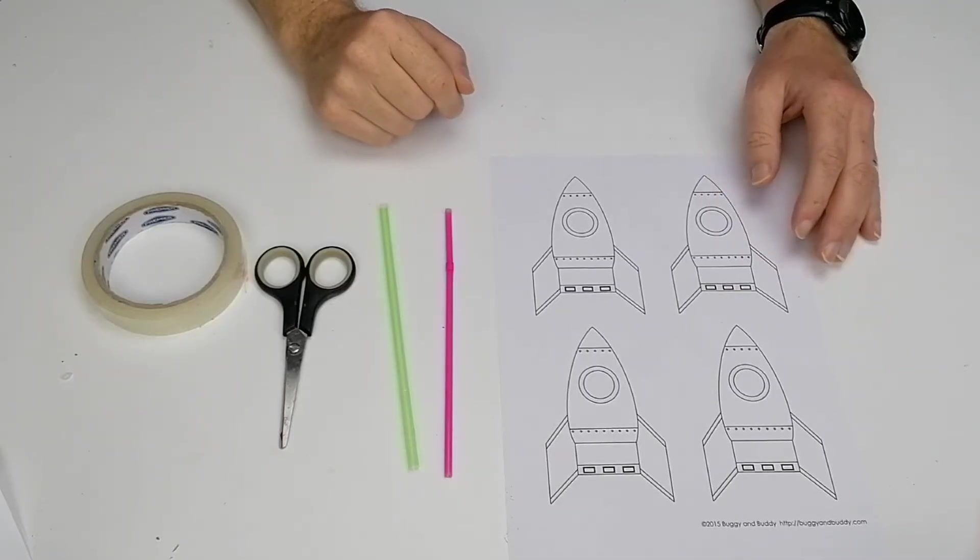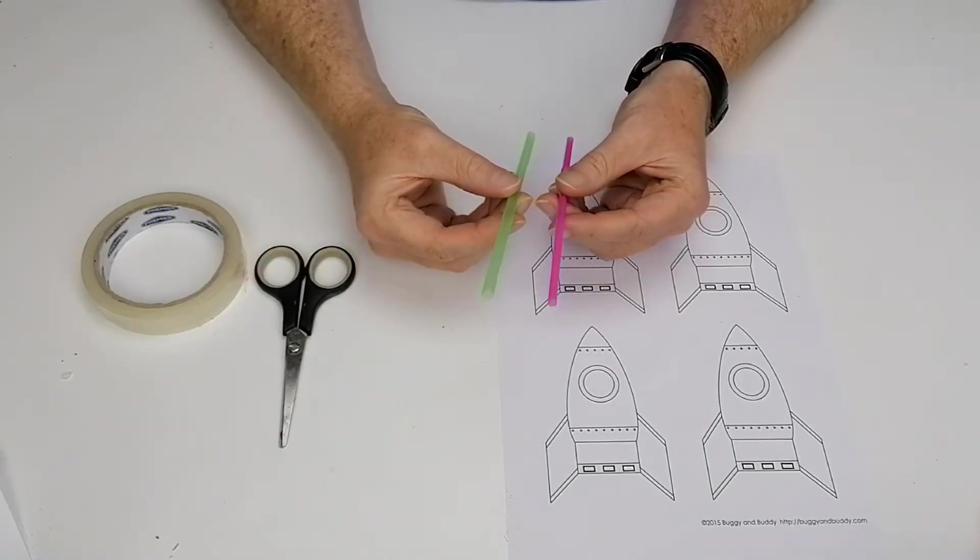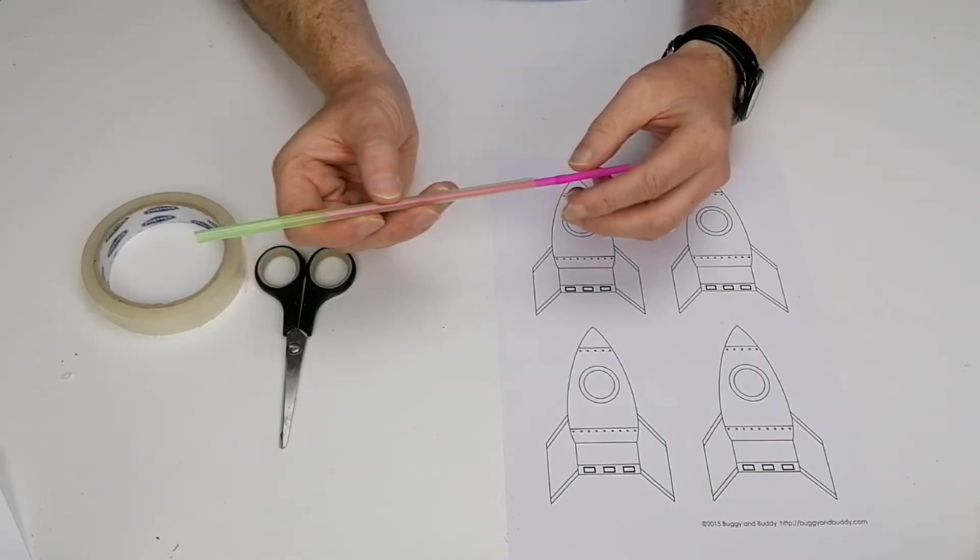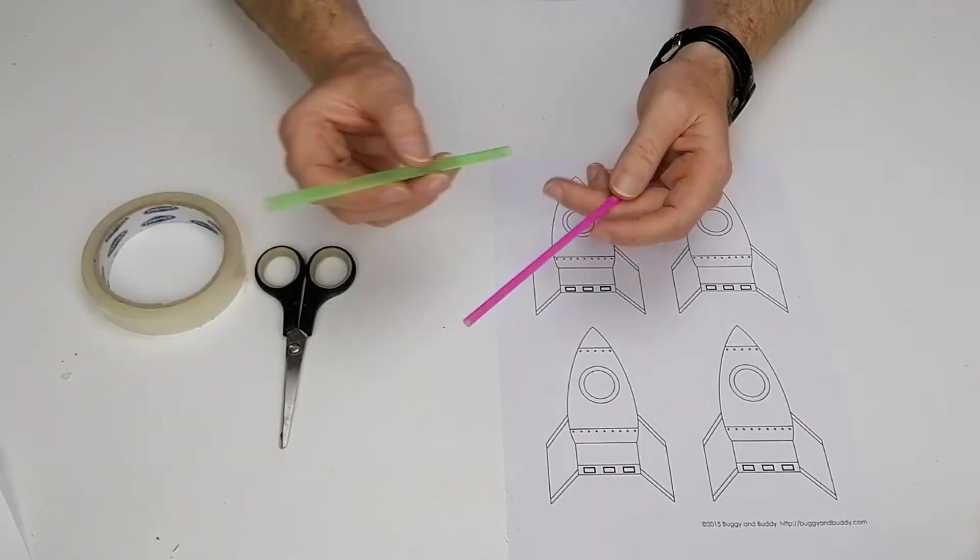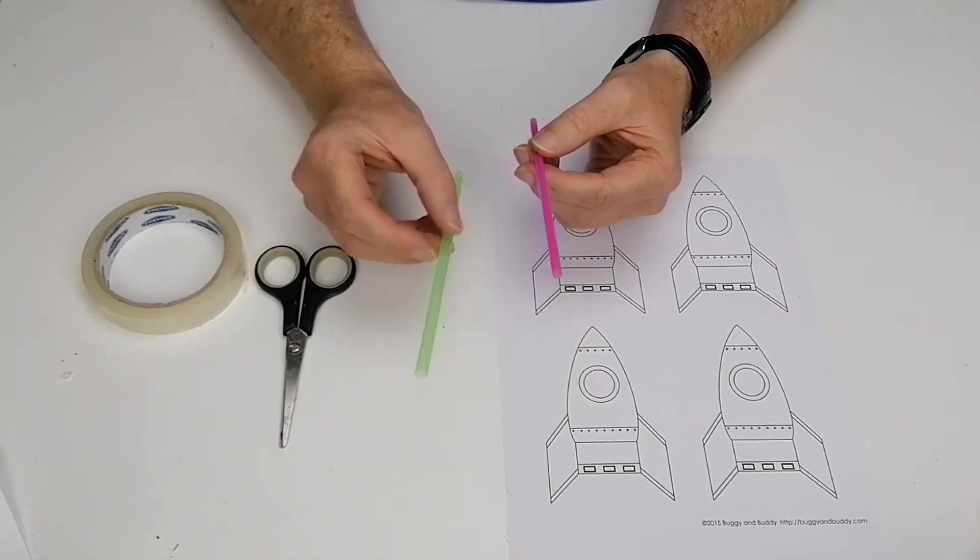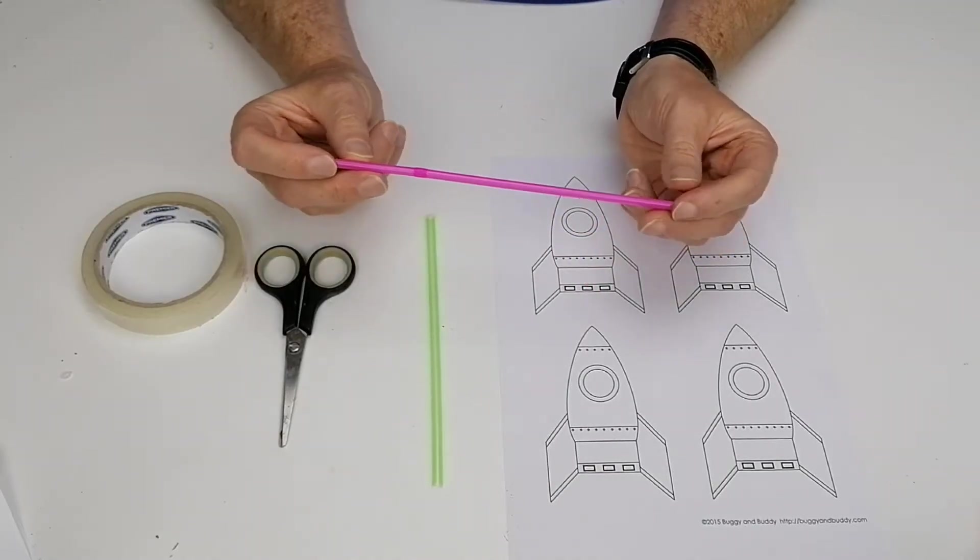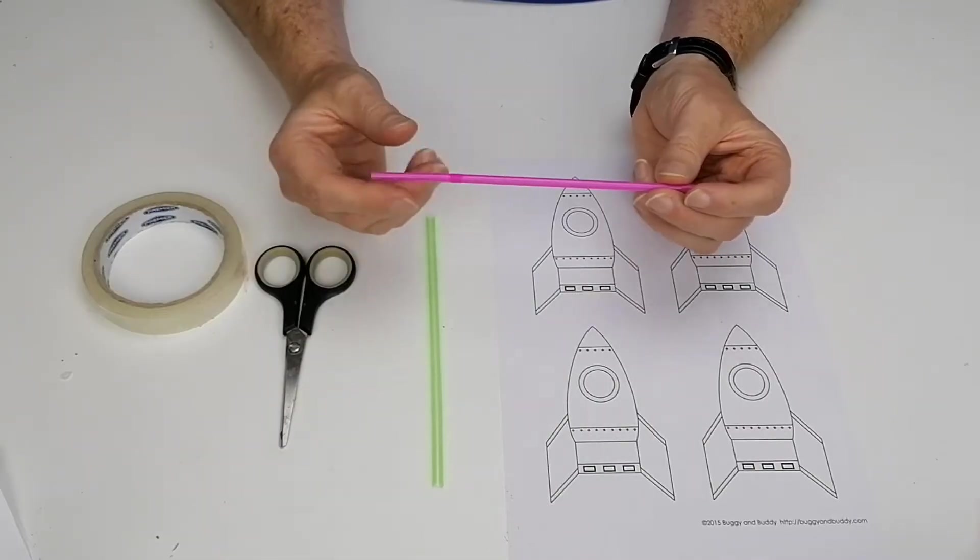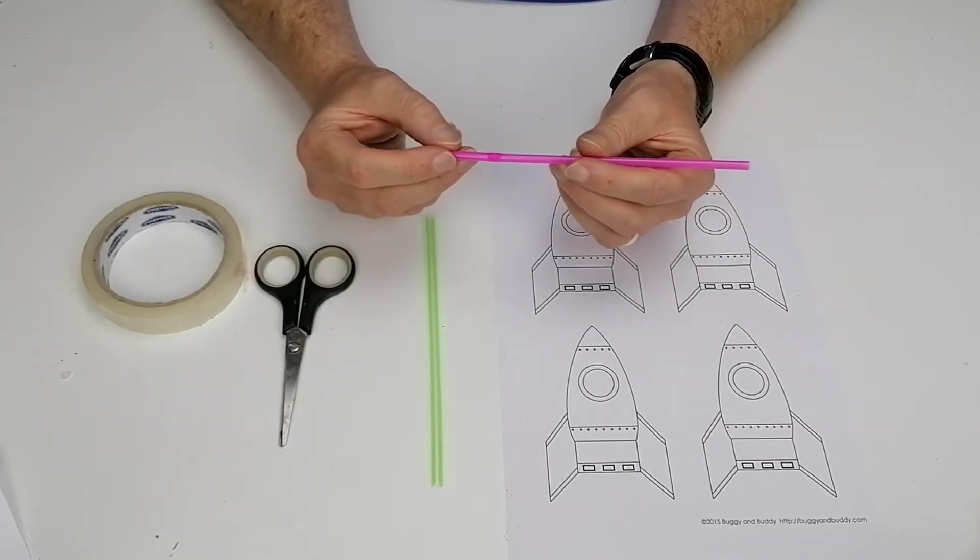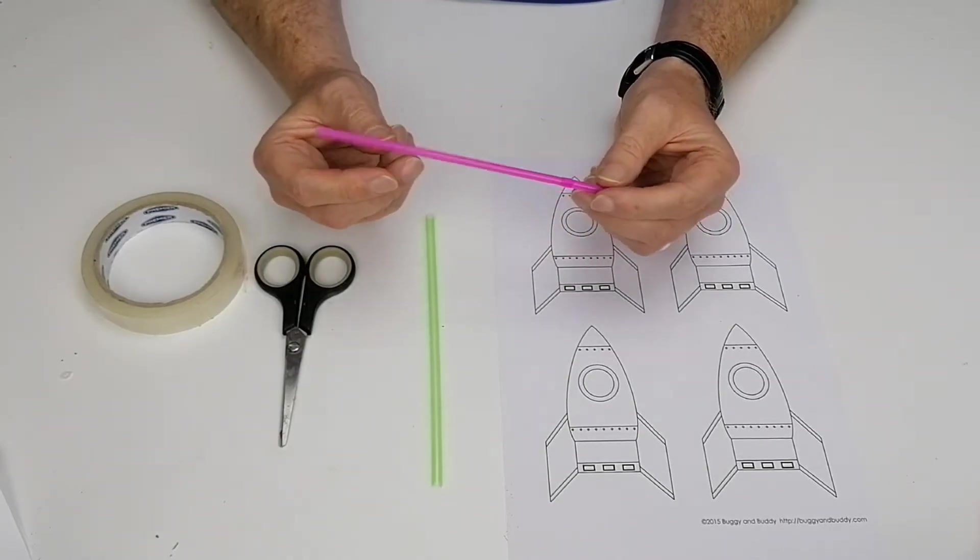One thing I might mention in our videos is that we use a lot of plastic straws. We would use paper straws if that was possible, but in this case, you need two different straws of different thicknesses to fit inside each other. So you can't really get paper straws of different thicknesses. Now, the thing about that is that you can reuse a lot of these straws. So if you take this bendy straw, which won't be cut, you can use this in another one of our activities called the Straw Kazoo. I'm going to leave a link to that video in the description if you want to try that.